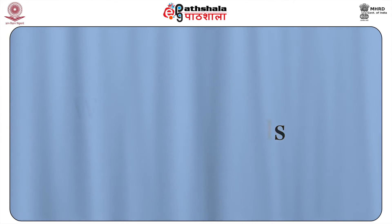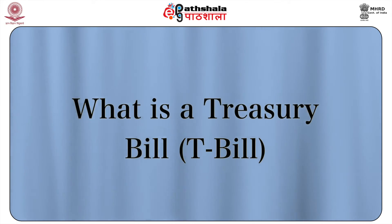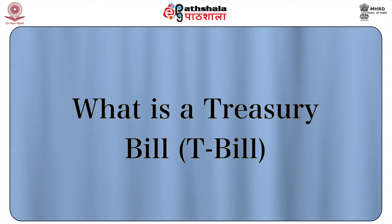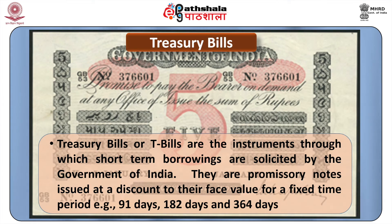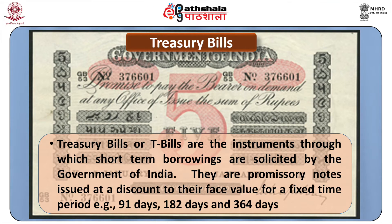Treasury Bills: What is a Treasury bill (T-bill)? Treasury bills or T-bills are the instruments through which short-term borrowings are solicited by the Government of India. They are promissory notes issued at a discount to their face value for a fixed time period, for example, 91 days, 182 days, and 364 days.